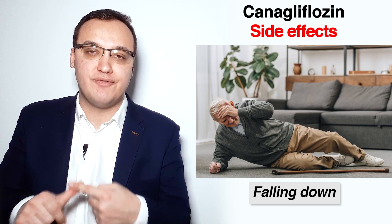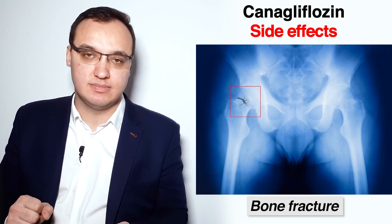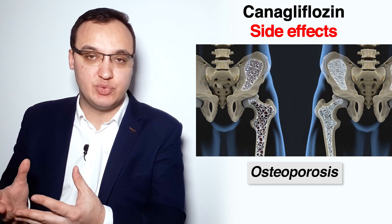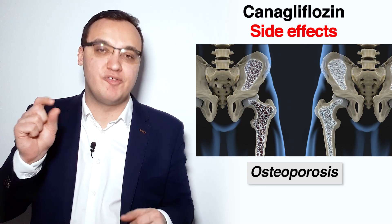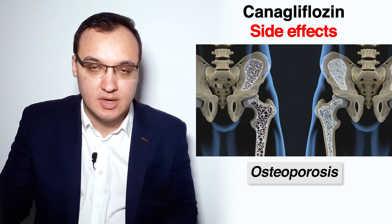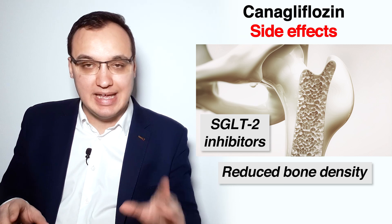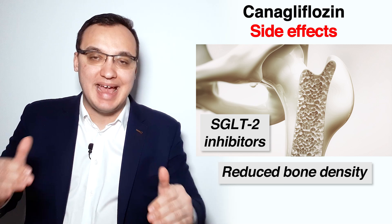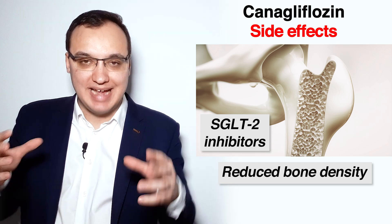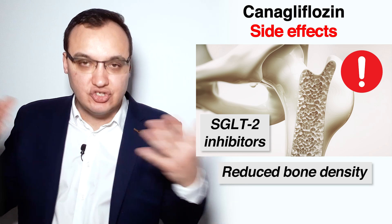If elderly patients fall due to low blood pressure and dizziness, the risk of bone fractures increases. Elderly patients often also have osteoporosis — thinning of the bones — which further increases fracture risk. To make things worse, SGLT2 inhibitors, especially Canagliflozin, can reduce bone density. Canagliflozin has the highest risk of bone fractures out of all the SGLT2 inhibitors.